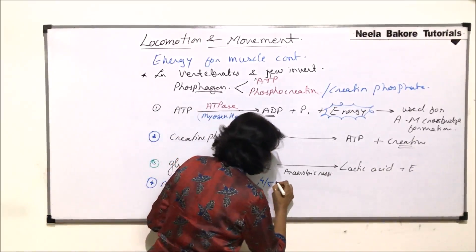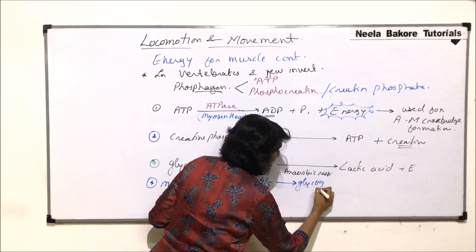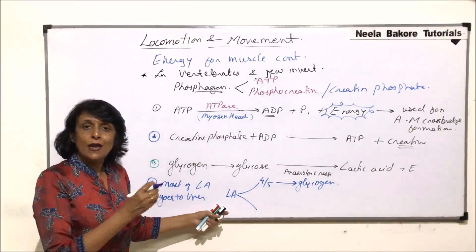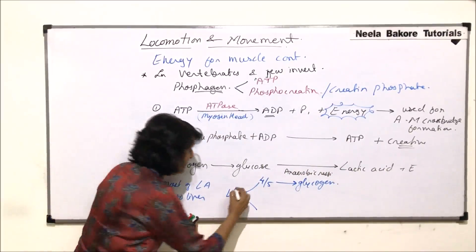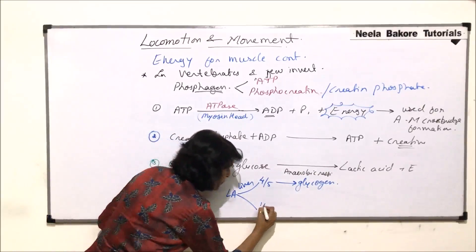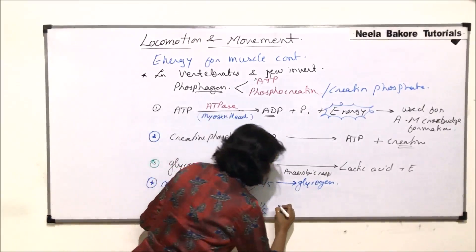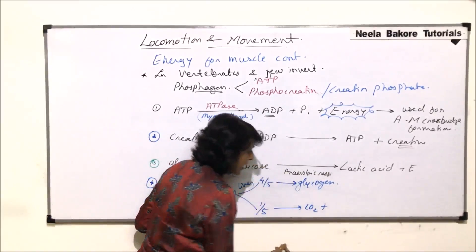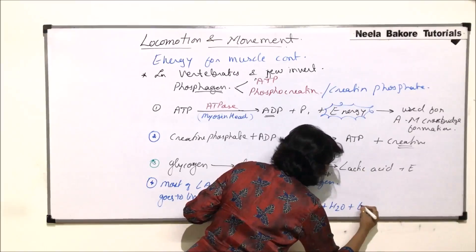In the liver, lactic acid is converted into glycogen and stored. This is the major pathway happening in the liver. The remaining one-fifth of lactic acid is broken down into carbon dioxide, water, and energy.